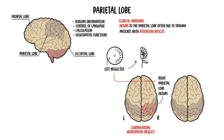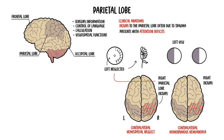Damage along the optic tract within the parietal lobe results in contralateral homonymous hemianopia. Here, injury to the right parietal lobe causes left homonymous hemianopia — you lose the left visual field.